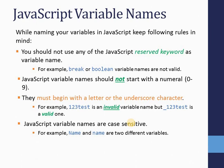JavaScript variable names should not start with a number — digits zero through nine — they must begin with a letter or an underscore character. For example, `123state` is invalid because it starts with a number, while `_state` is valid because it starts with an underscore. JavaScript variable names are also case sensitive, so two names that differ only in case are two different variables.